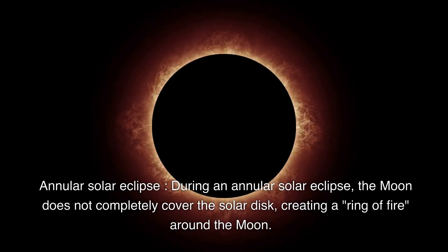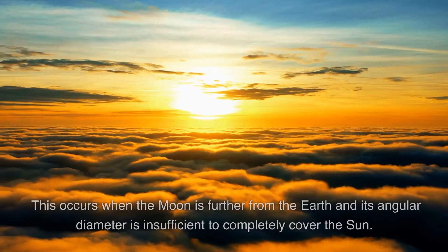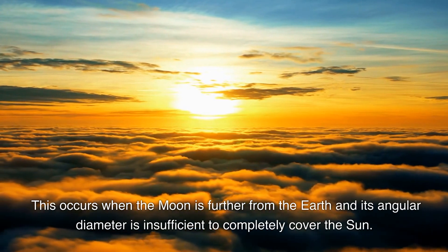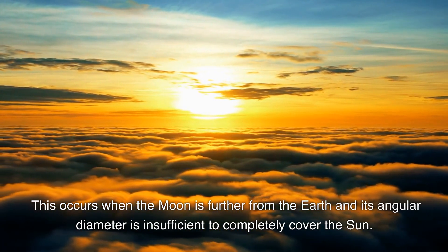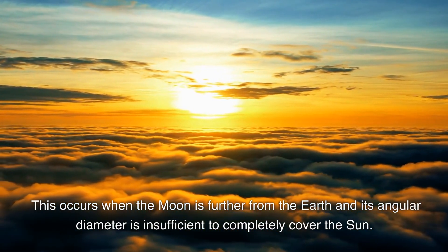Annular solar eclipse. During an annular solar eclipse, the moon does not completely cover the solar disk, creating a ring of fire around the moon. This occurs when the moon is further from the earth and its angular diameter is insufficient to completely cover the sun.